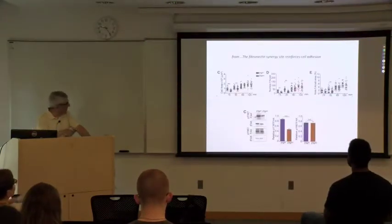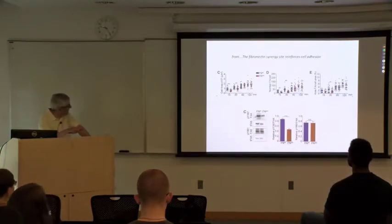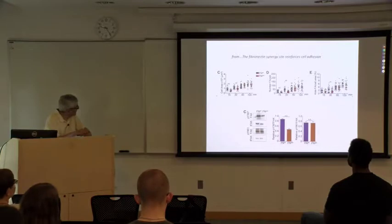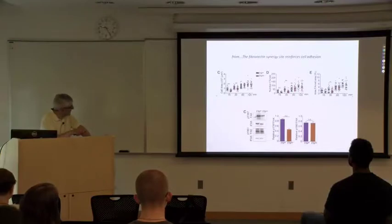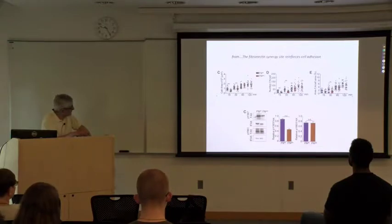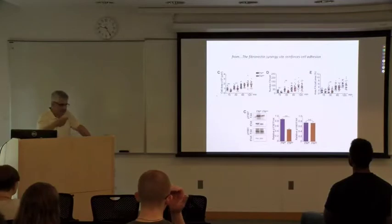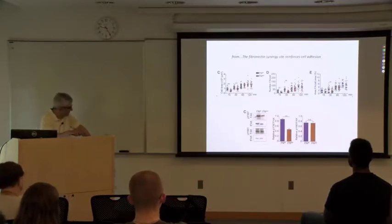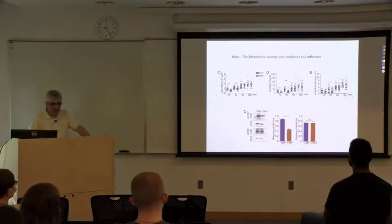Here's data from that paper looking at cell adhesion — the purple is wild type and the orange is the one that lacks the synergy site. Over time, adhesion is pretty similar, as is the number of focal adhesions. But if you look at the ability to phosphorylate mechanosensitive proteins, that's dramatically affected if you remove the synergy site.